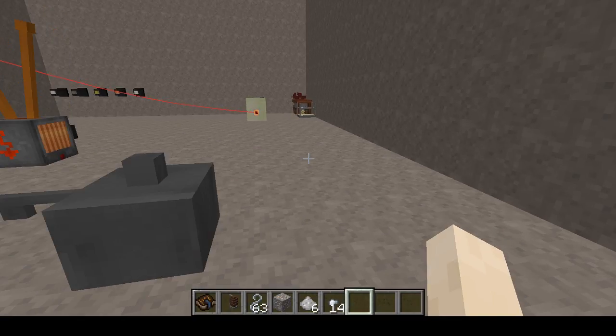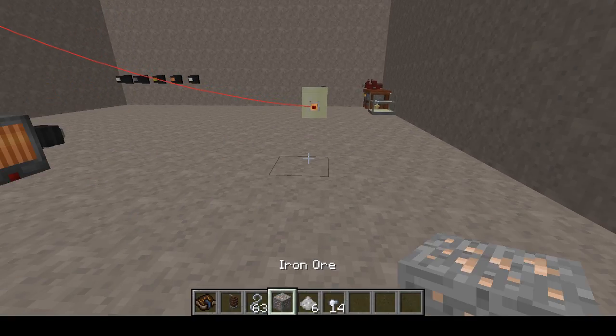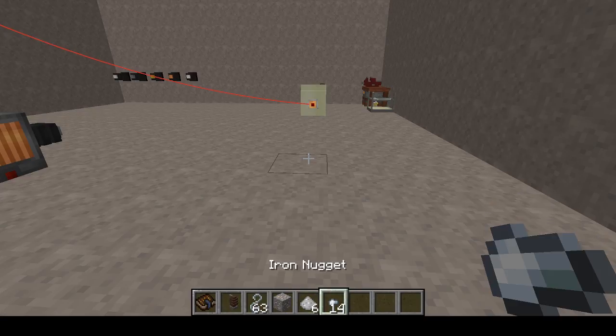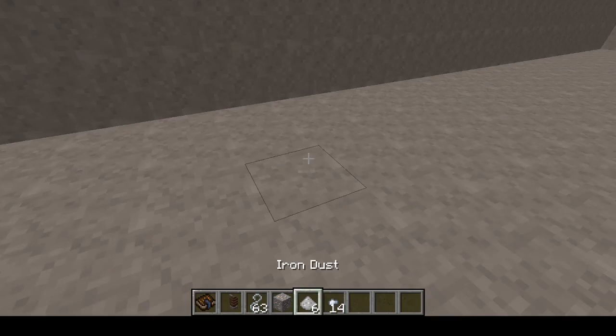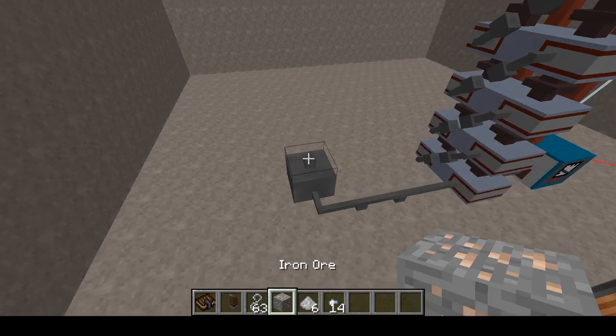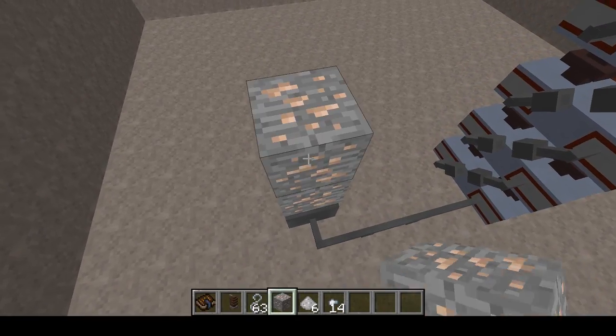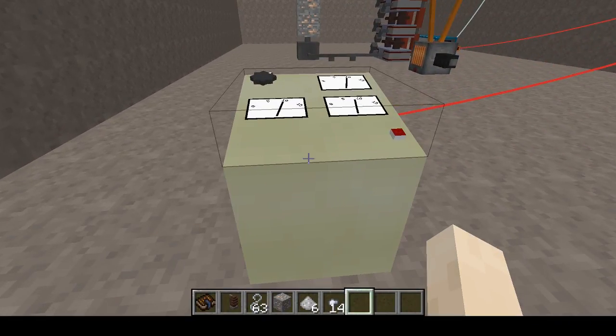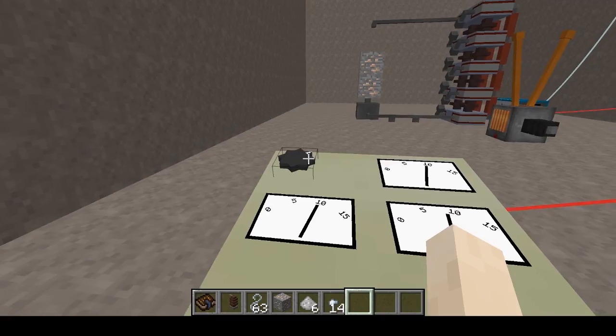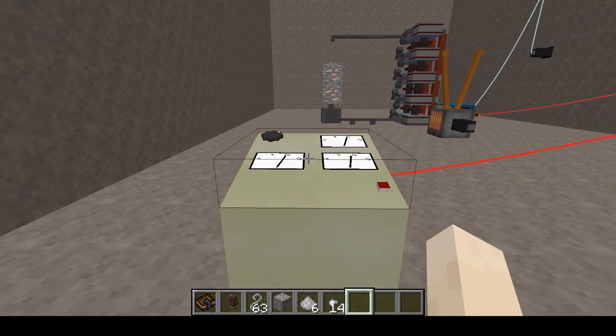And, as you can see, we did not get the 8 iron dusts that we should have gotten, ideally. That's because there's a small error in the values in the book.